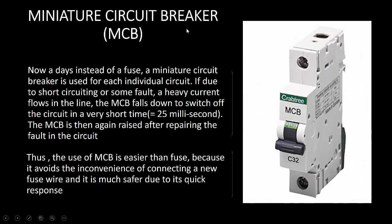What is a miniature circuit breaker? Nowadays, instead of a fuse, we use a miniature circuit breaker or MCB for each individual circuit. If due to short circuiting or some fault a heavy current flows in the line, the MCB trips to switch off the circuit in a very short time — 25 milliseconds. The MCB is then reset after repairing the fault. The use of MCB is easier than a fuse because it avoids the inconvenience of connecting a new fuse wire and is much safer due to its quick response. Nowadays we prefer MCB over fuse.